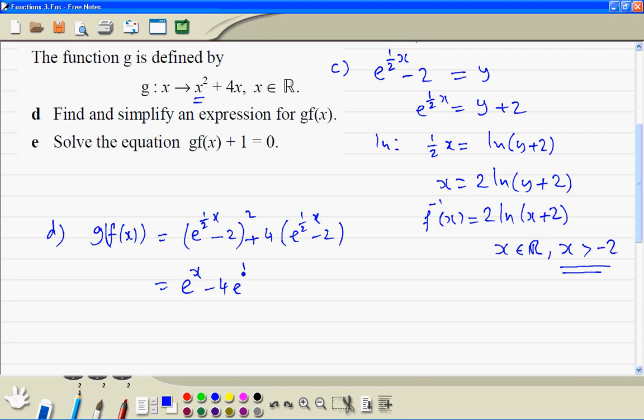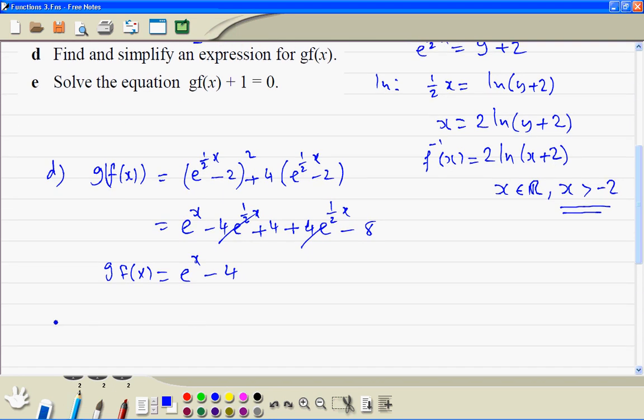The 4 e to the power of half x terms cancel with minus 4 e to the power of half x. This simplifies to e to the power x minus 4.